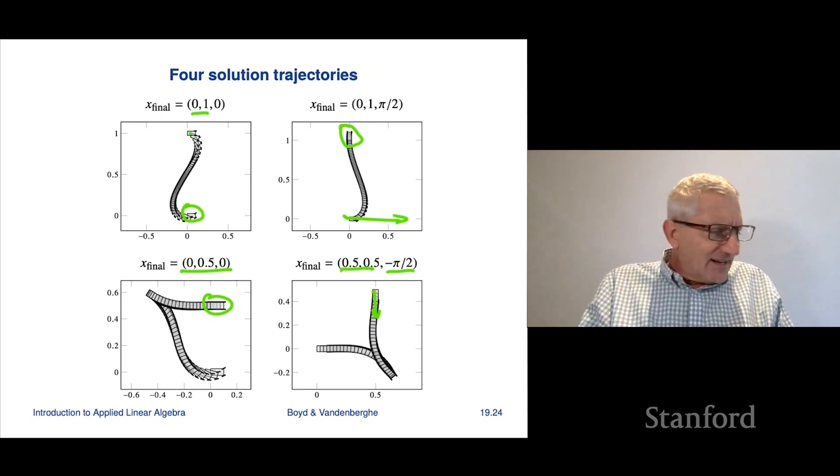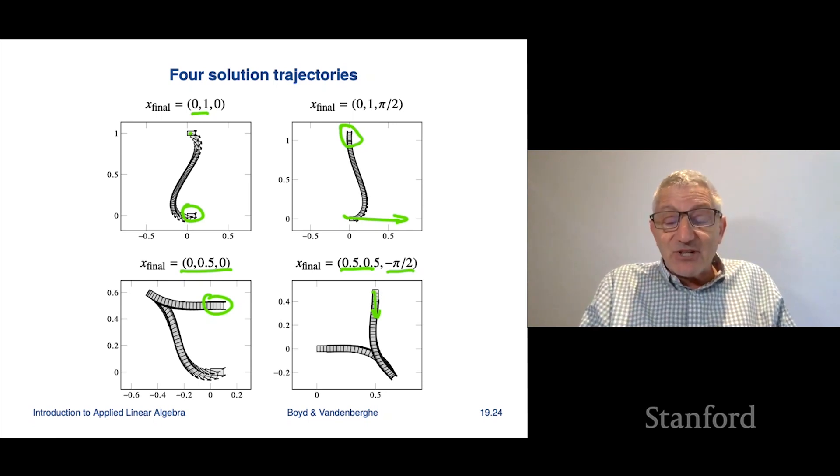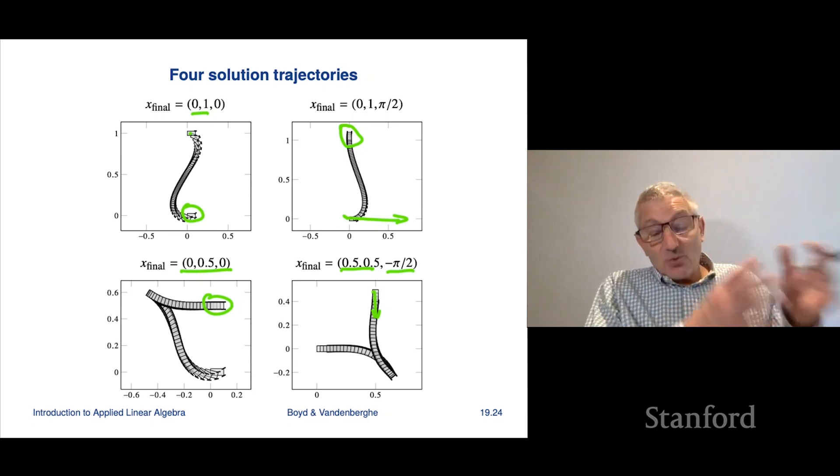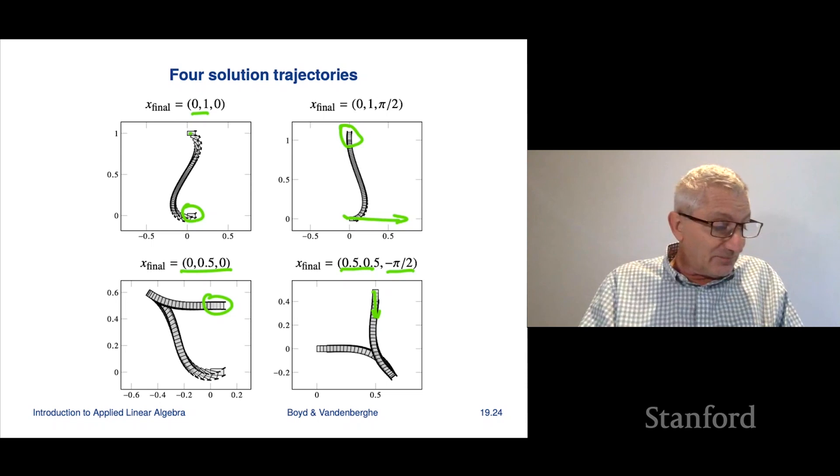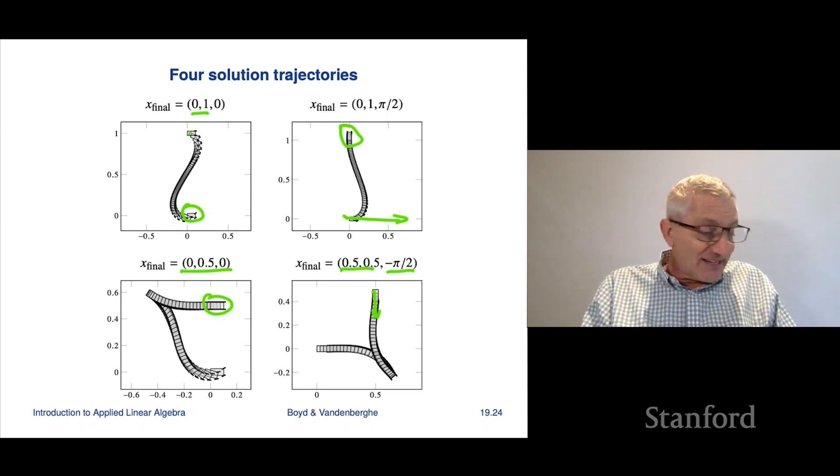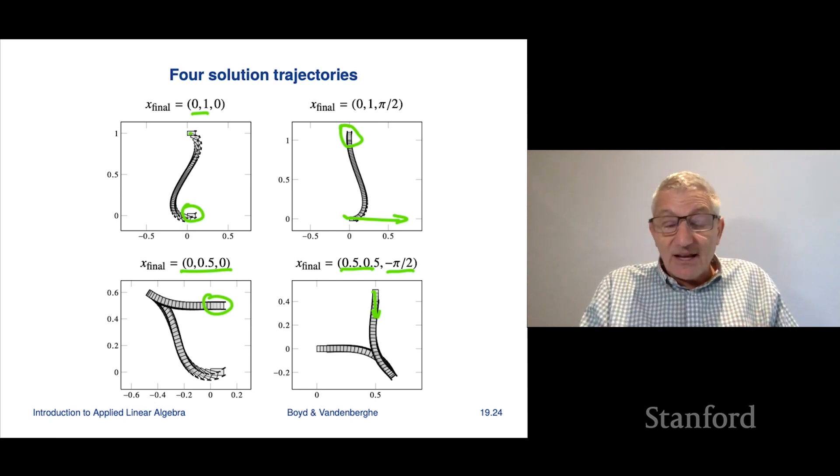Here's another one where you start here and you want to end up at the point 0.5, 0.5, and minus pi over 2. And so that means pointed down this way. And so the way you do that is you drive forward here, you stop, and then you simply back up along here. So these are pretty crazy trajectories. By the way, I should add that people do find trajectories for cars this way or ways that look like this. So this is done for sort of self-driving cars, auto parking, all sorts of other crazy stuff. They do something that's equivalent to this. It's actually probably pretty close to just this.